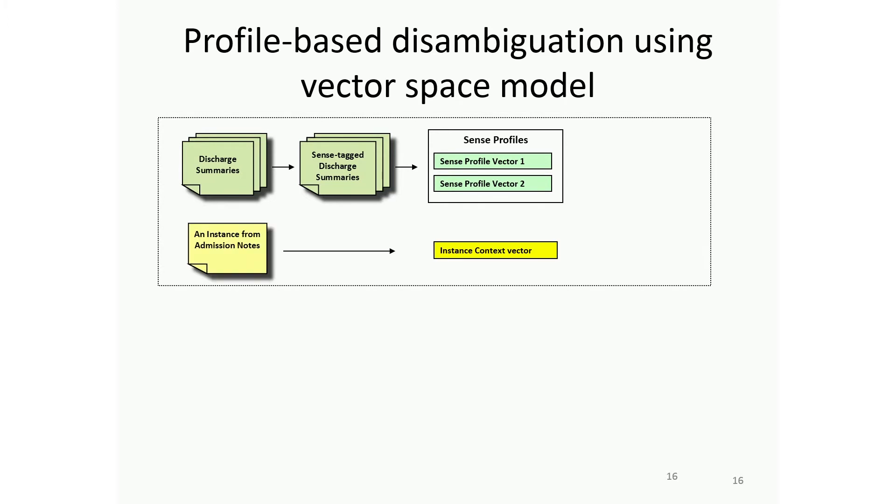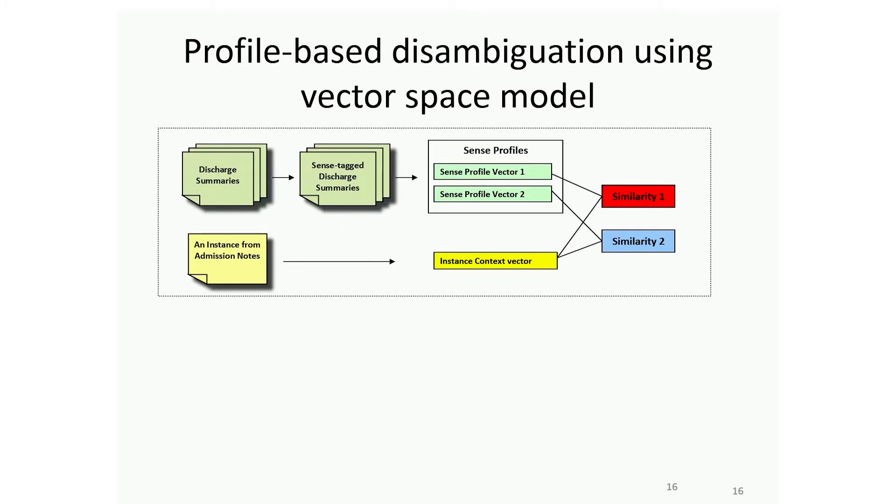When a new instance comes in, we compare the context with those sense profiles. We calculate similarity and we decide which sense is the required one. Basically, I just showed you a simple example of how we do disambiguation, but there's also a lot of machine learning based methods.